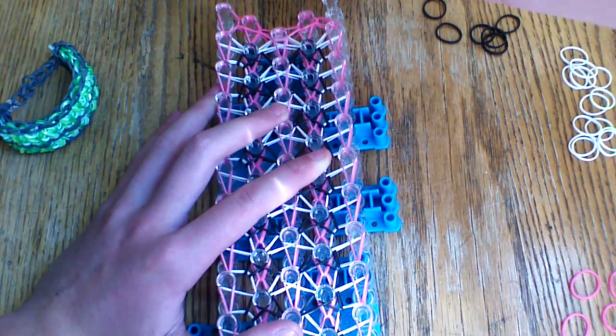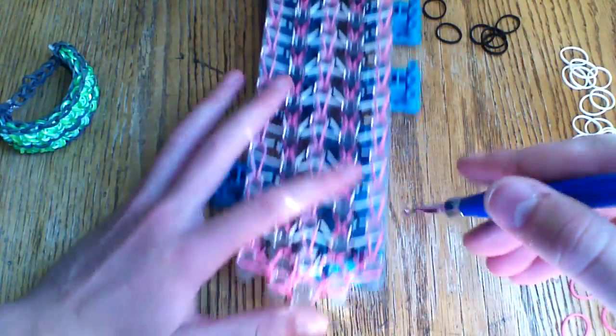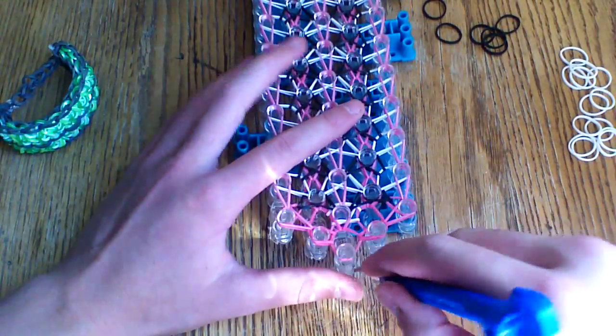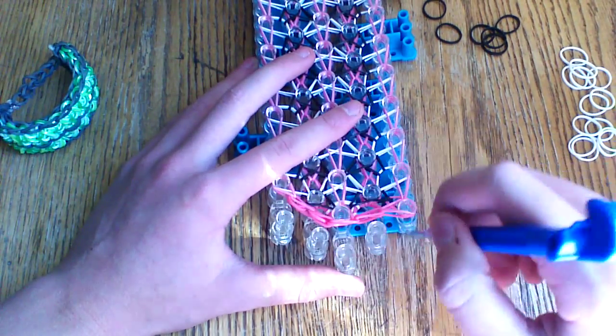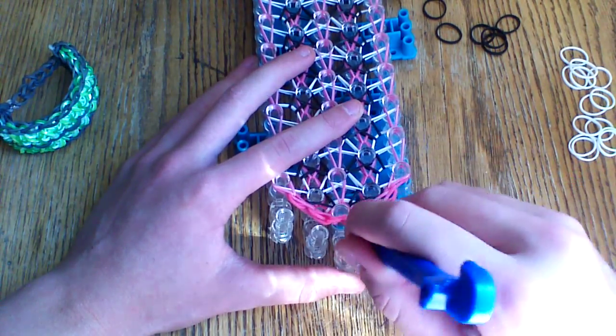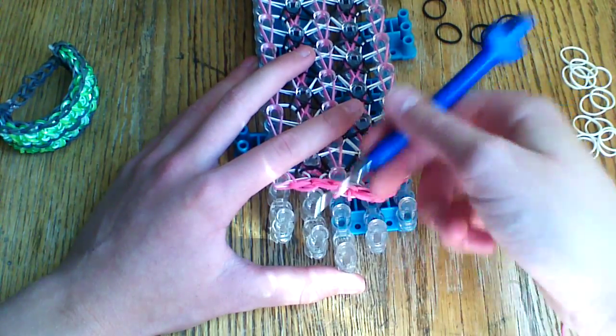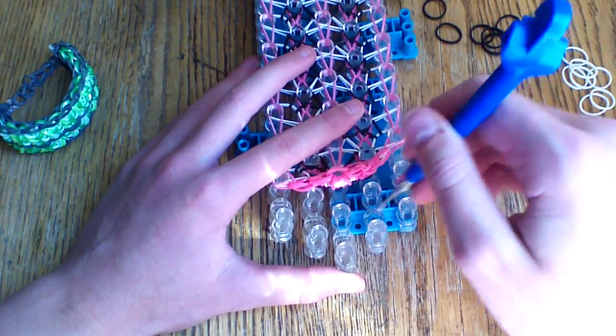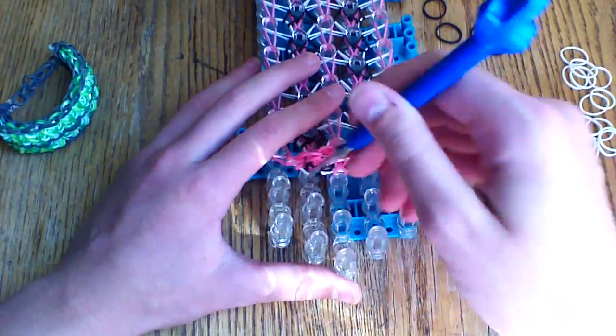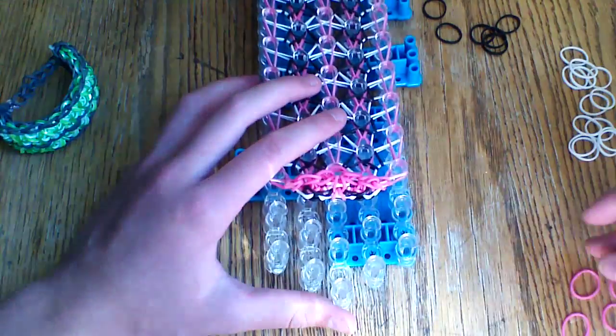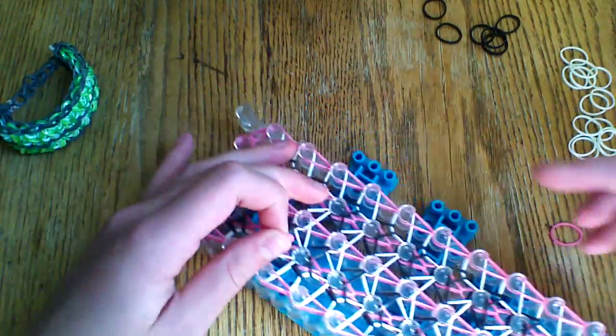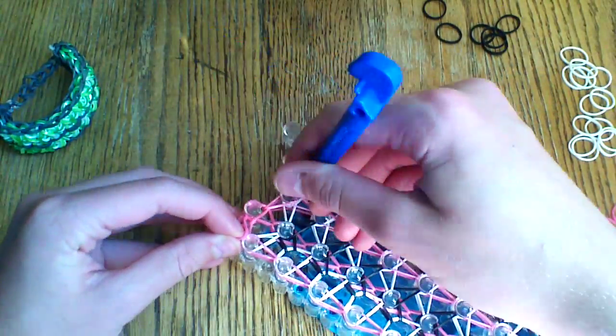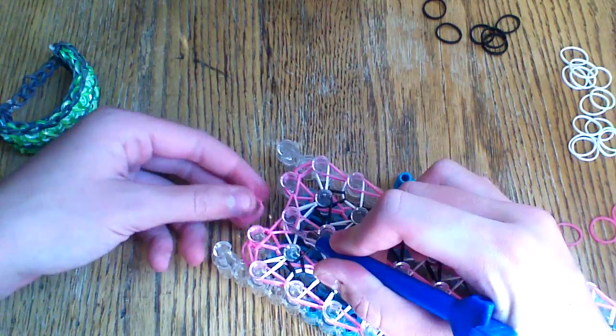And now we can take this off of our loom. So, I'm going to take it off from the bottom. And this might be a little boring to watch, but I'll try to go quickly. I'm just going to take all of these bands off from the bottom. Because I don't like to take it off from the top. Actually, for this bracelet, it's not too tight. So, I might.